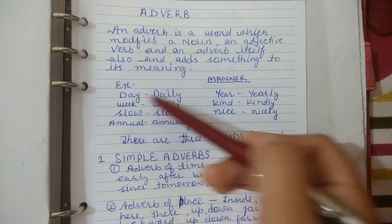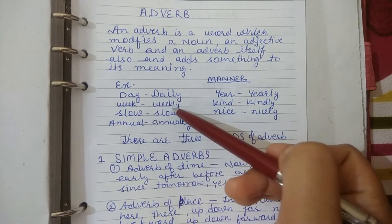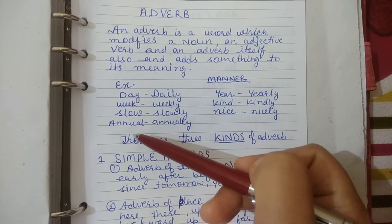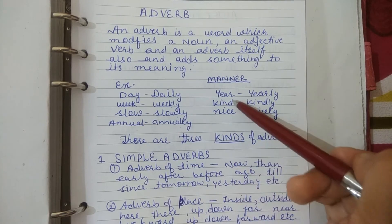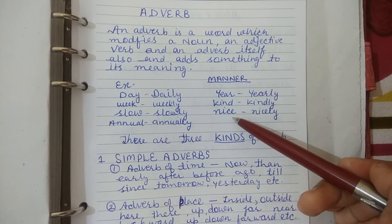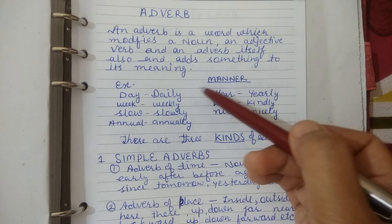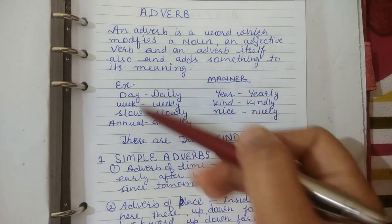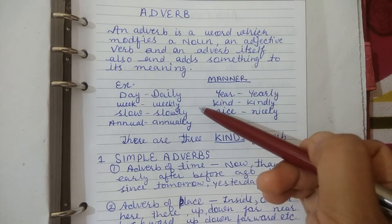Examples: day – daily, week – weekly, slow – slowly, annual – annually, year – yearly, kind – kindly, nice – nicely. These show manner — how to present, how to say things.